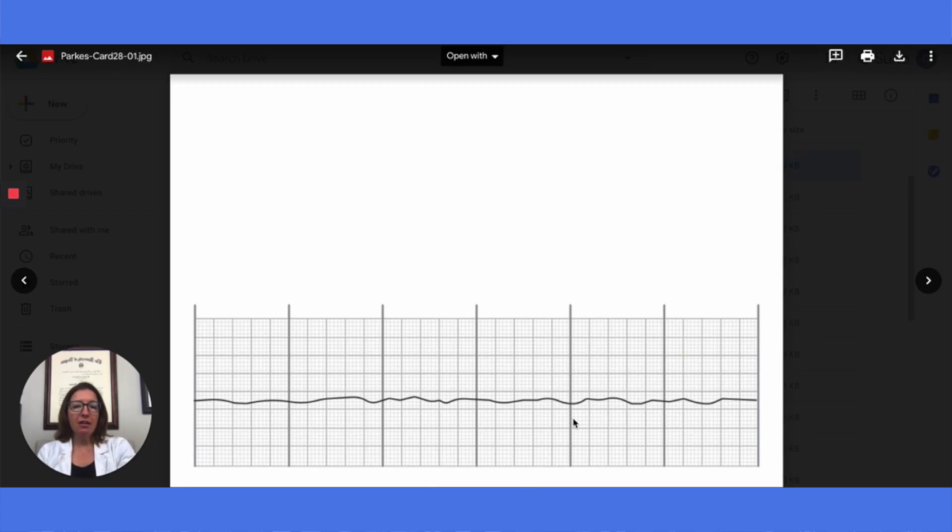Of course, if your patient is up and talking and you see this rhythm, chances are that their teleleads are just not on. So definitely use your common sense. But if your patient is unresponsive and you see asystole, then definitely get going on the chest compressions. That wraps up ventricular rhythms. In my next video, we will start talking about heart blocks. Thank you so much for watching.